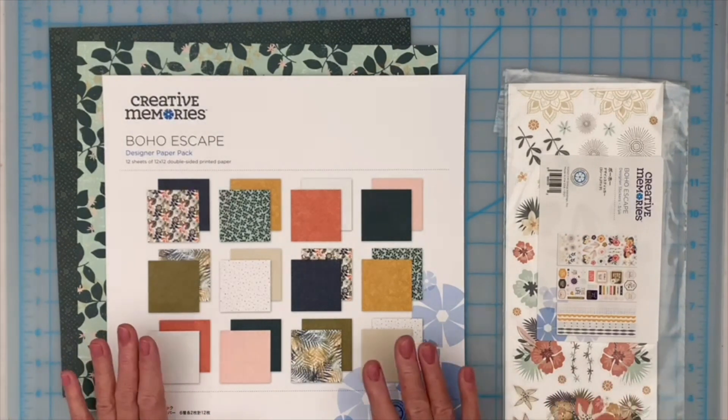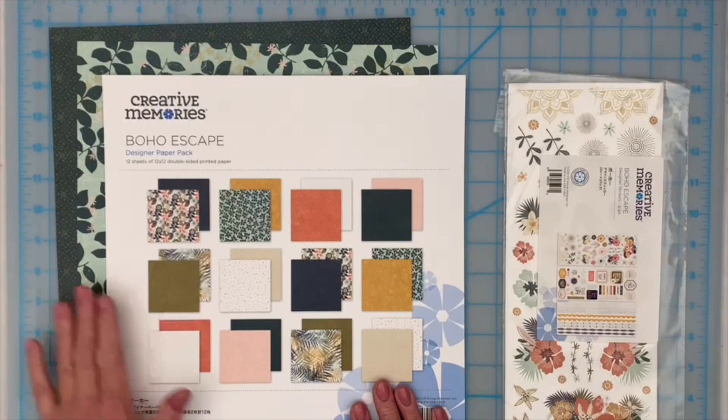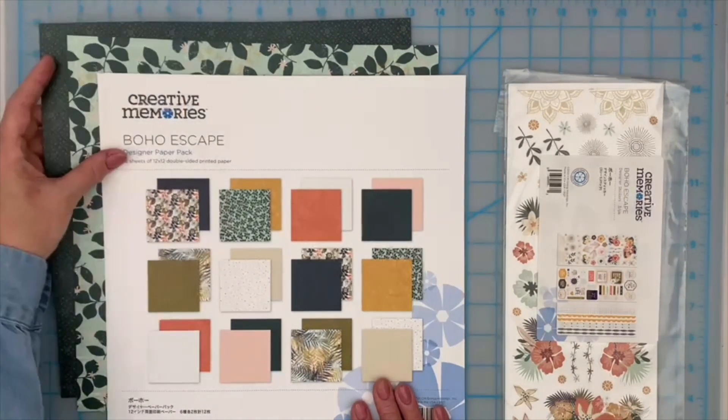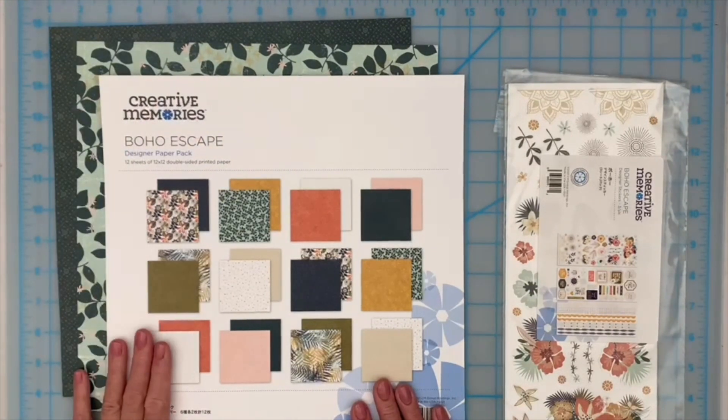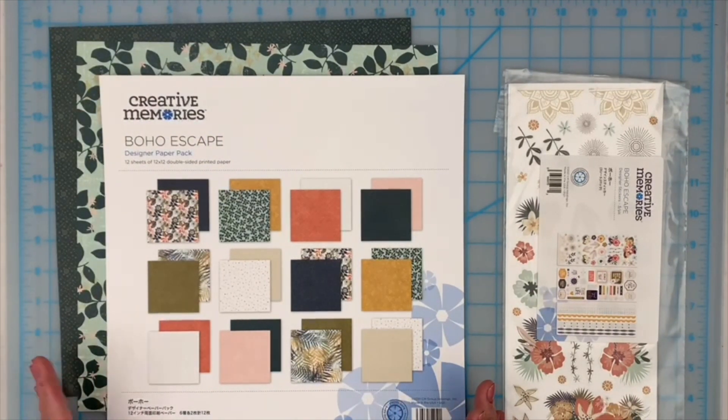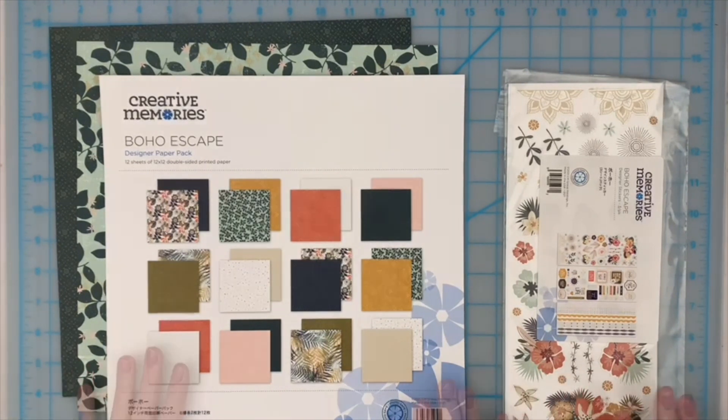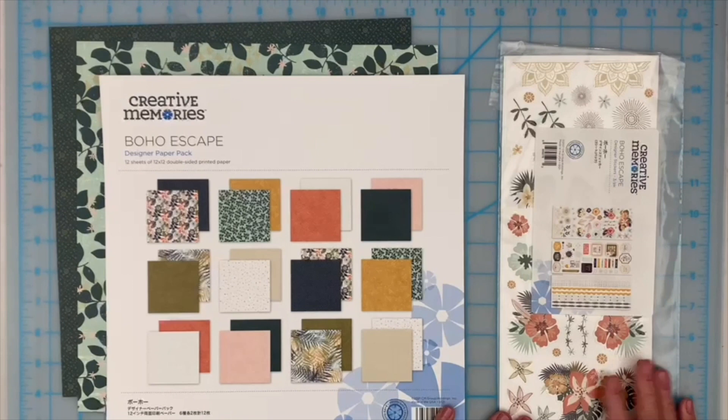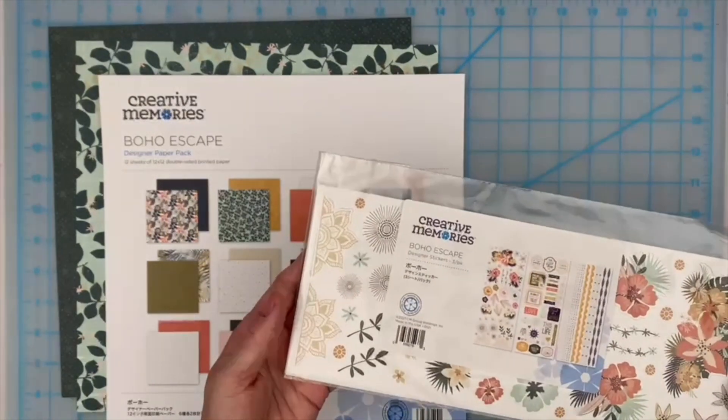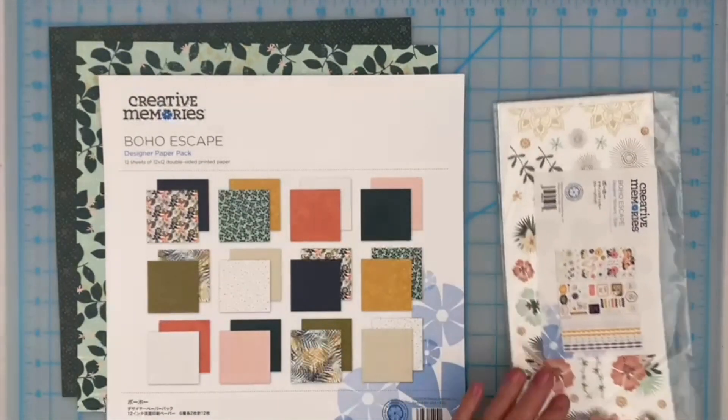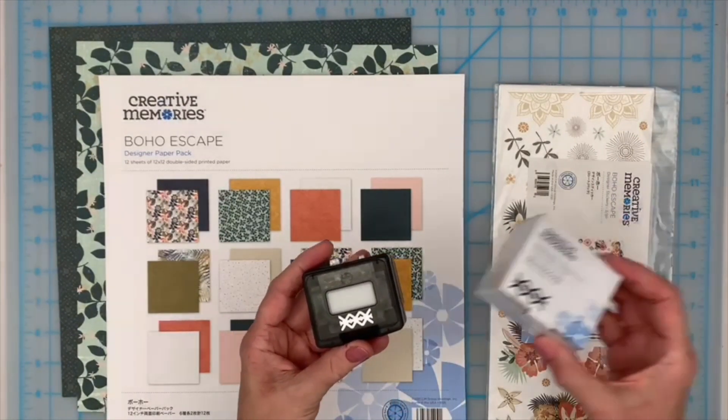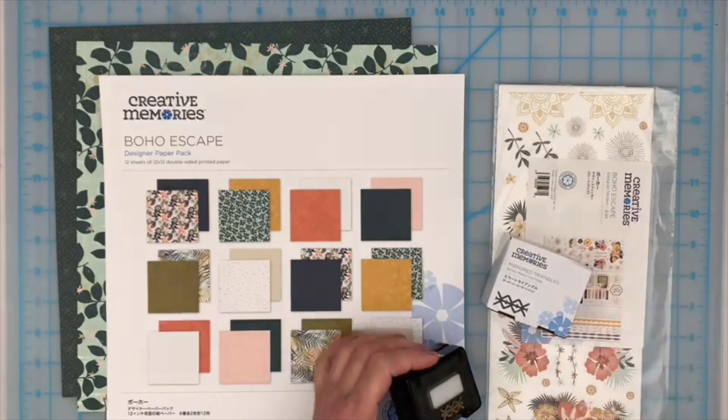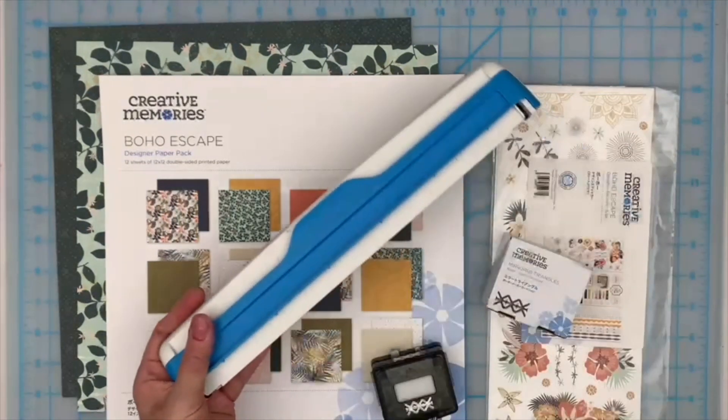We're going to be using just two pieces of double-sided pattern paper from the Boho Escape collection. I love these because it gives you four patterns to work with. We'll make the embellishing and titles really easy using the Boho Escape stickers, and the only other thing we'll need is our new border punch, the mirrored triangles border maker cartridge with the original border maker system.